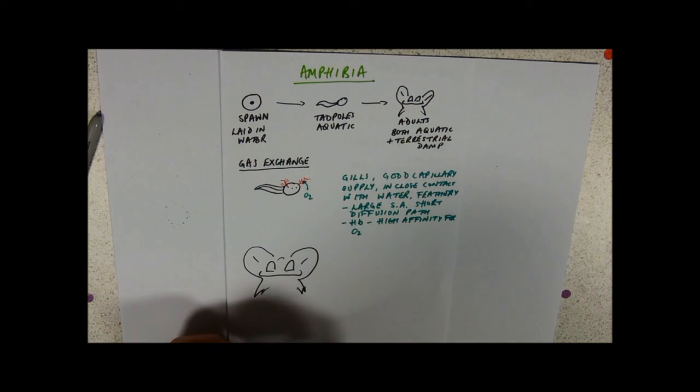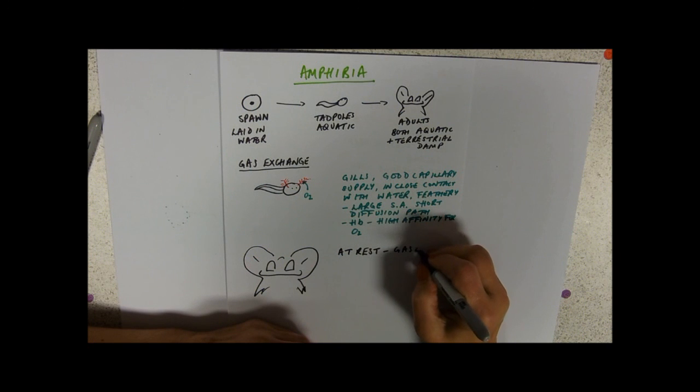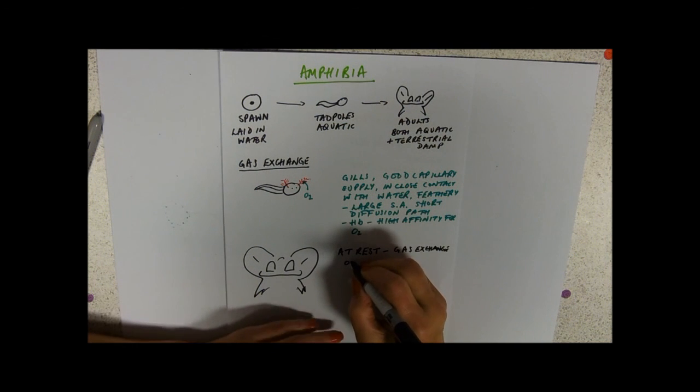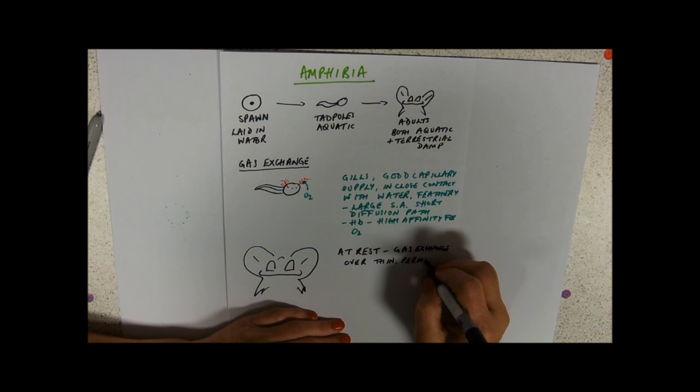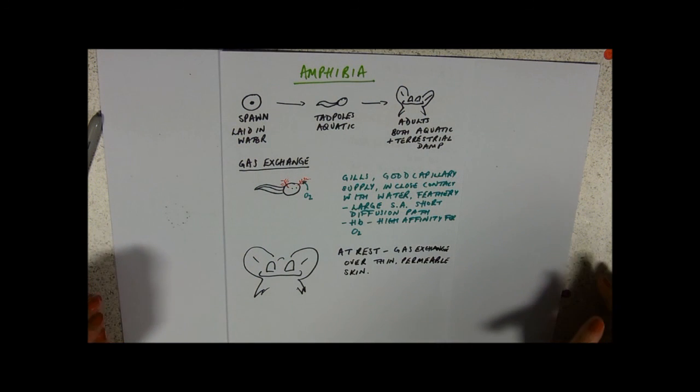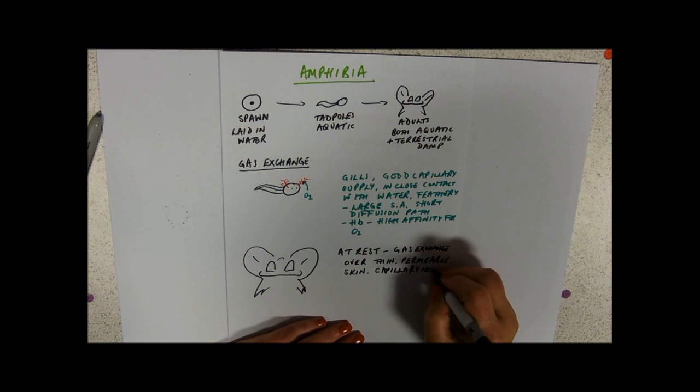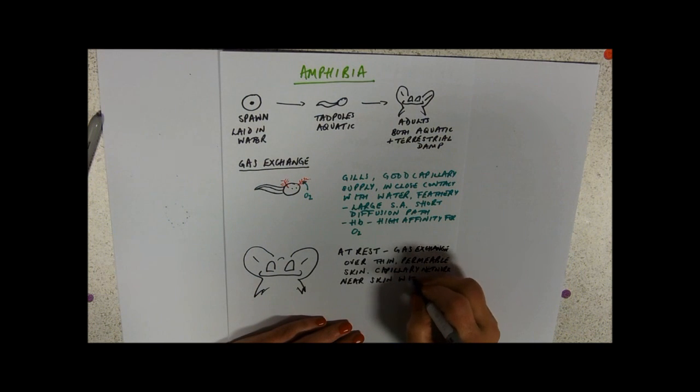It does two things. So it has simple lungs, but at rest, when it's not using masses of oxygen, it does gas exchange over its skin, and that's why frogs kind of feel a bit slimy. It's because their skin is quite delicate and thin, so they have thin, permeable skin, and at rest, that's kind of enough to allow them to have a lot of oxygen, because they've got a capillary network near the skin, with haemoglobin, with its high affinity for oxygen.